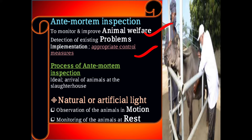Ante-mortem inspection starts at the arrival of animals at the lairage, or simply the slaughterhouse. Natural and artificial light is provided 24 hours. Observation of the animals is done in motion as well as monitoring of the animals at rest, to detect any kind of problem.